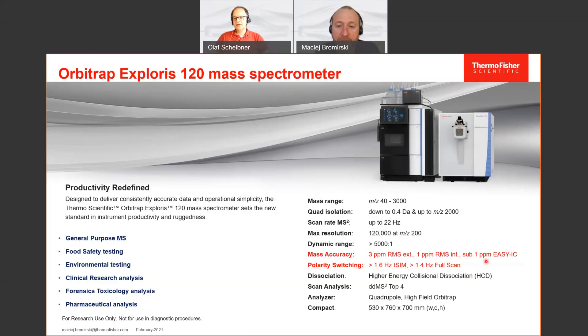As an addition to the Exploris series instruments, we have the internal calibration system called EZIC. If you engage that, you will have mass accuracy better than 1 ppm for at least 5 days.